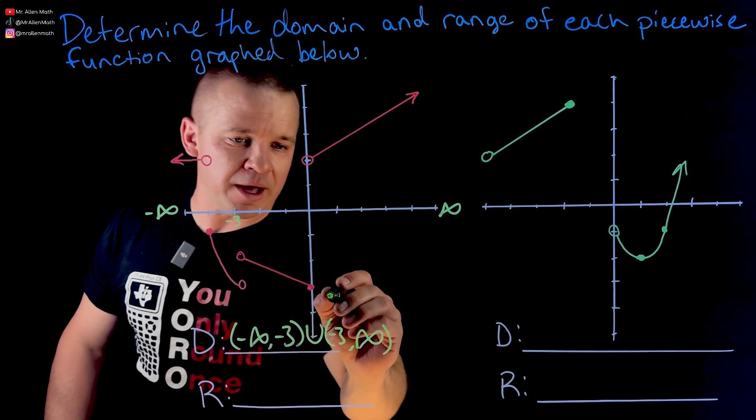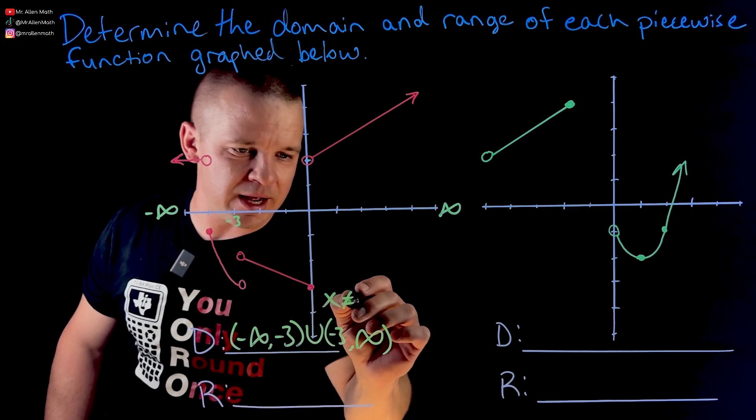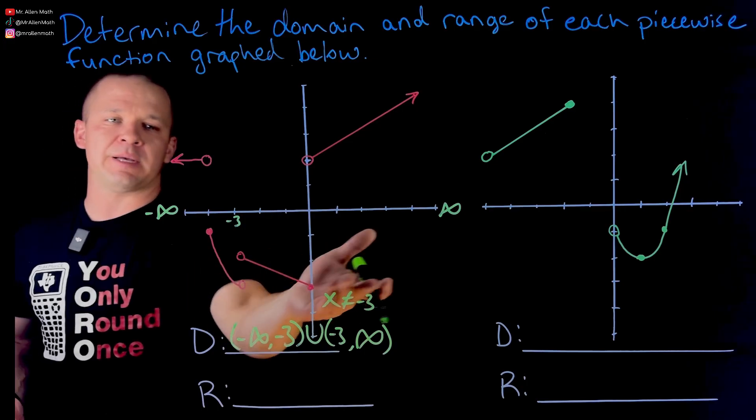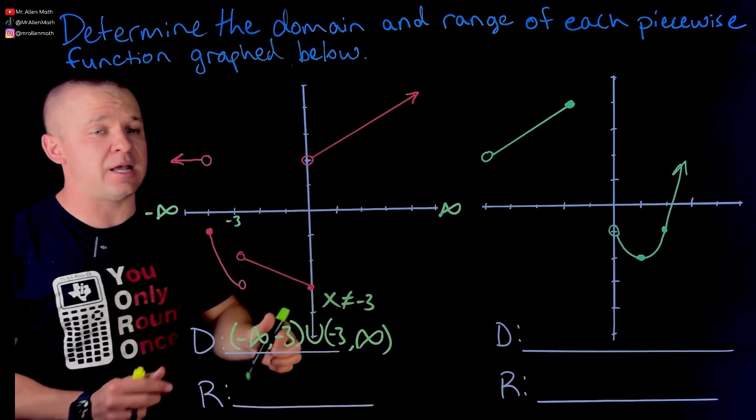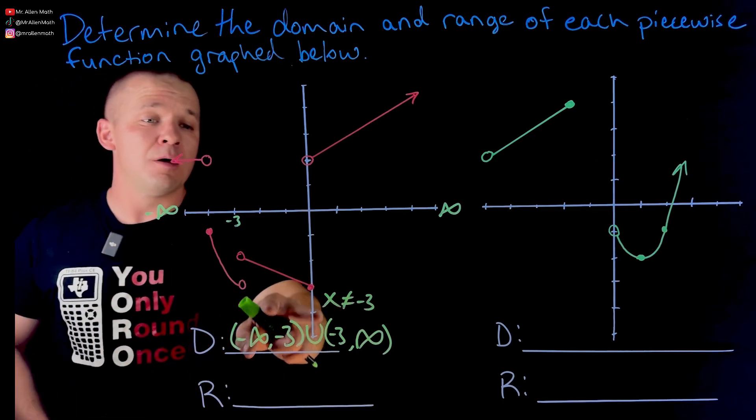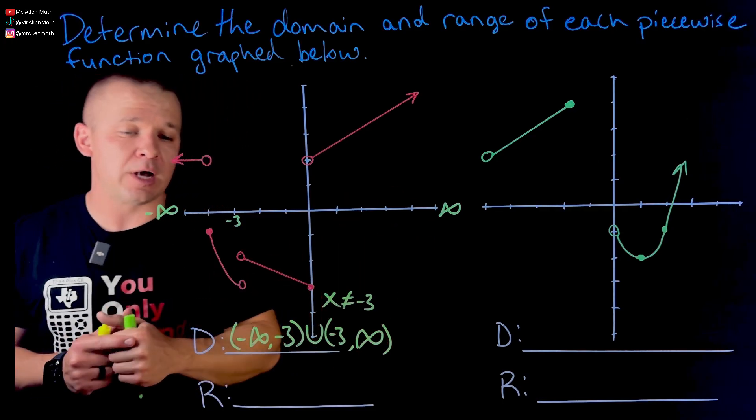Another way of writing this would be, and I think usually they want you guys to do interval notation with these styles because you tend to just read it from left to right and start eliminating things. But another viable answer would be X cannot equal negative three. That's the only value you were excluding.